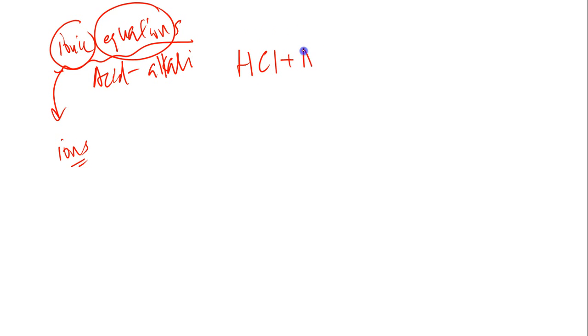So let's have a simple acid alkali reaction: HCl plus NaOH. Acid and alkali gives us salt and water. So in this case, the salt is NaCl - front takes the back, back takes the front - and my water is H2O.